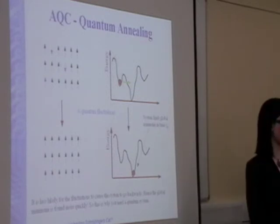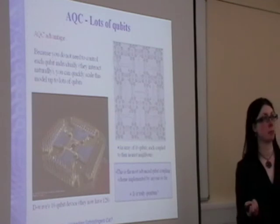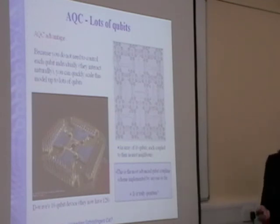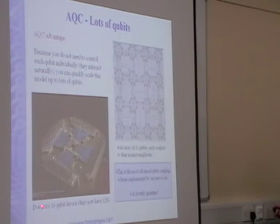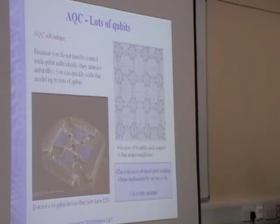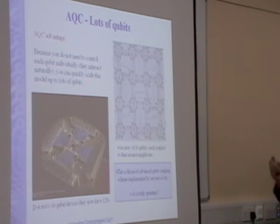What does this have to do with real-world problems? Here's an example of a system that's actually been made. There are lots of qubits all coupled together, just like the spins in the diagram. This has actually been made on a chip by a company called D-Wave, and it's the most advanced qubit coupling scheme so far. Here's one with 16 qubits — they now have 128 qubits. So if it's adiabatic quantum computing, they have hundreds of qubits; if it's the gate model, they have four. Because you don't need to control each individual qubit like individual transistors — you just couple them and let them talk to each other — you can scale this system up quite easily.